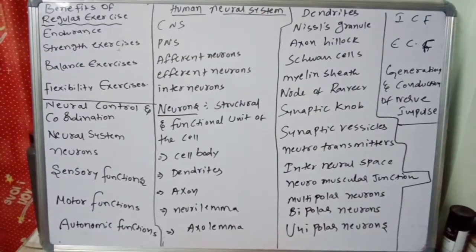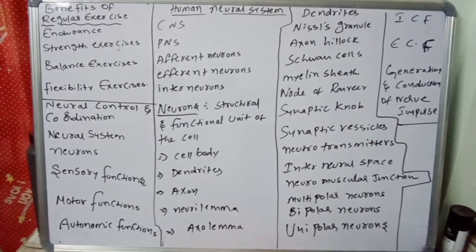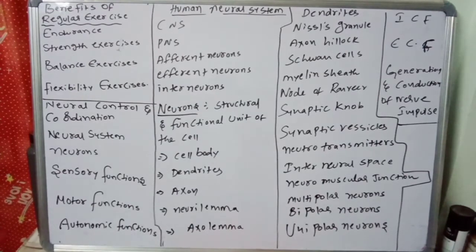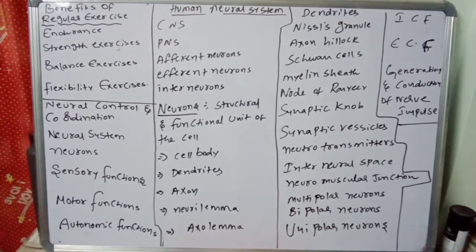Good morning children! Today we are going to discuss about another important concept in the locomotion and movement chapter — the benefits of regular exercise. We previously discussed the appendicular skeleton system, axial skeleton system, total bones, bone structure, and the structure of the long bone. Disorders of the muscular and skeletal system were also discussed in previous classes.